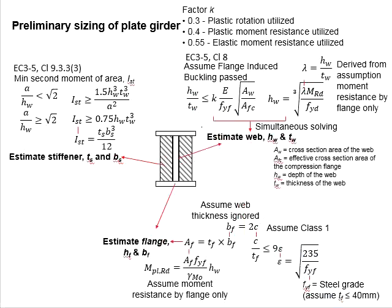First, we try to estimate the size of the web. Considering that the flange-induced buckling is going to be passed for the web, this equation is required. And assuming that the moment is resisted by the flange only, this leads to these equations.